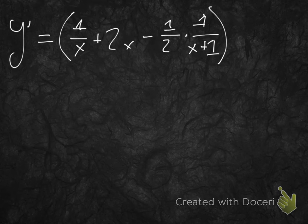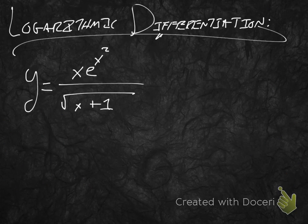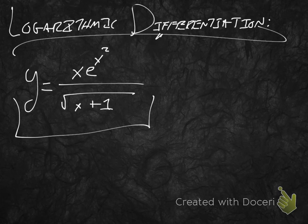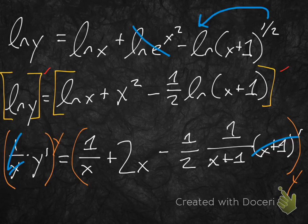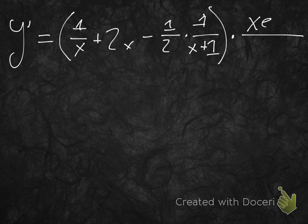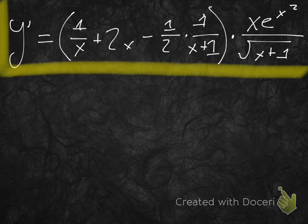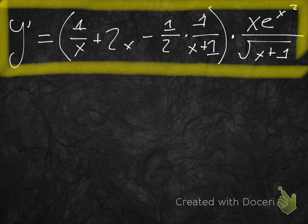So, let's come over here and we'll have that y prime is equal to, well, what we just had, 1 over x plus 2x minus 1 half times 1 over x plus 1 times y. Well, we can't just write y, though, can we? Because we already know what y is, right? So, let's not cheat. Let's make this correct. We just said at the beginning that y is equal to x e to the x squared over radical x plus 1. So, we can just write x e to the x squared over radical x plus 1 right here and we're done.